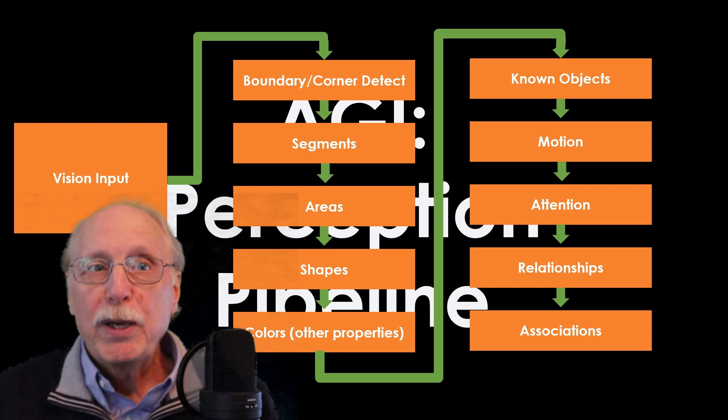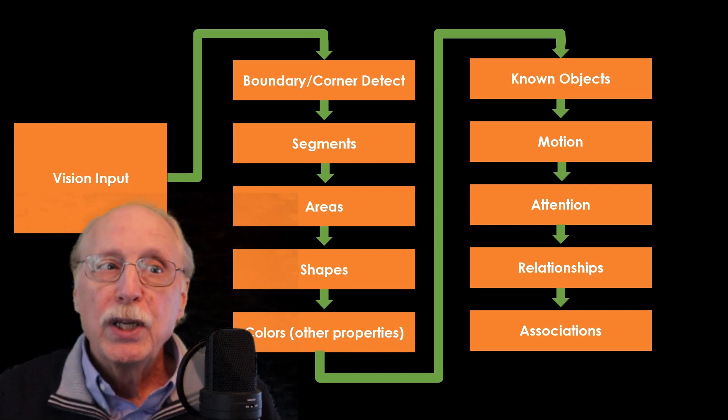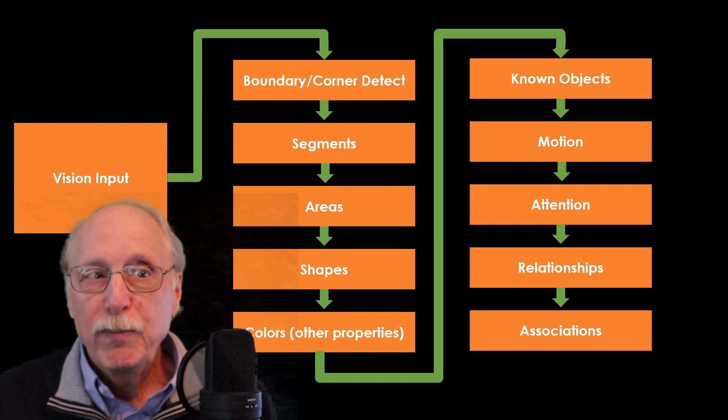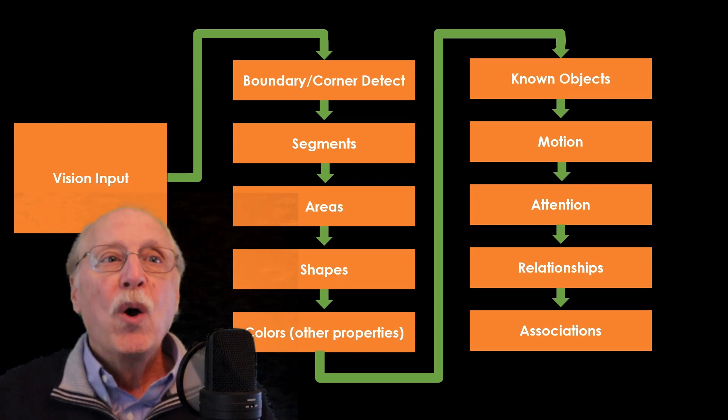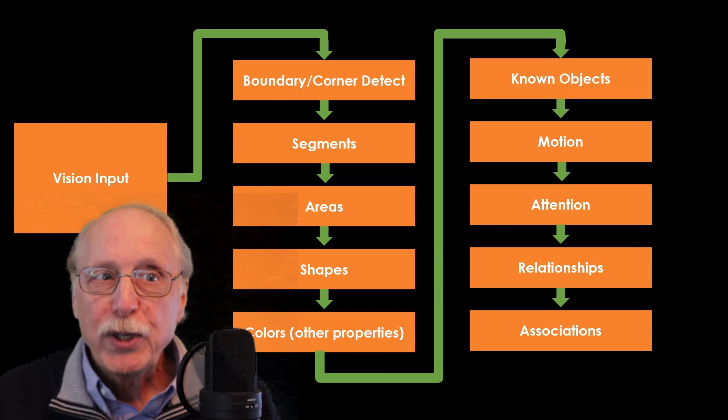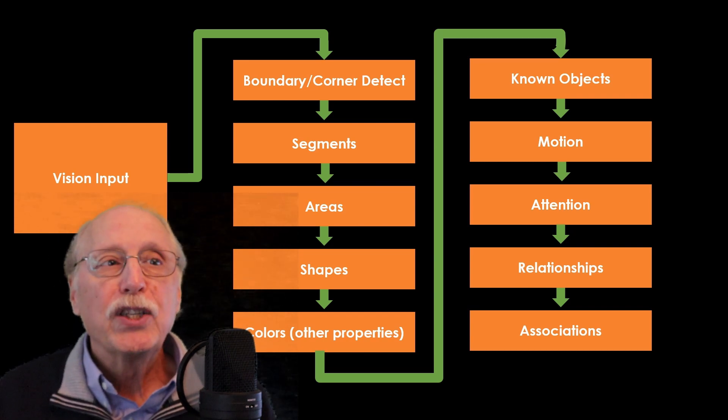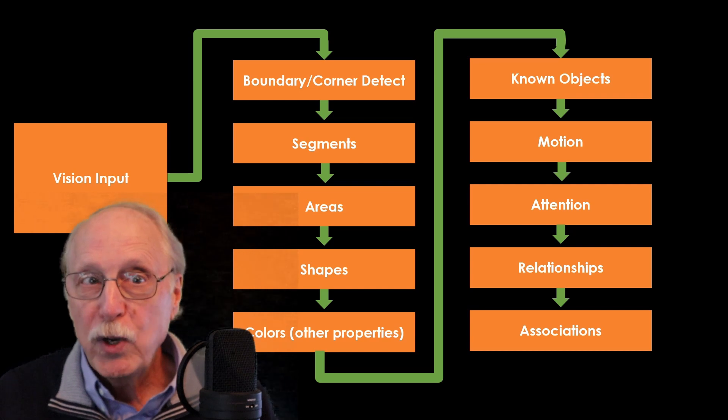Steps in the perception process are implemented as individual brain simulator modules. Some of these represent classic computer vision algorithms while others break new ground. Although I'll be describing the pipeline for visual perception, a similar pipeline exists for hearing and other pipelines may exist for other senses as well.